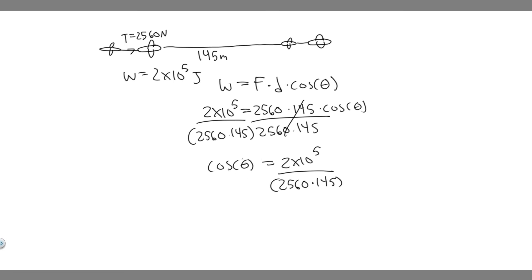If we want to find theta, to get rid of the cosine, you have to take the arc cosine of both sides. It's going to cancel that, and you'll get theta, or the angle we're solving for, is going to be the arc cosine of 2 times 10 to the 5 over 2,560 times 145.